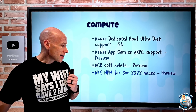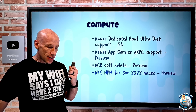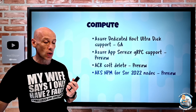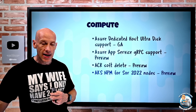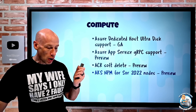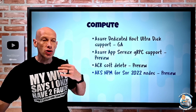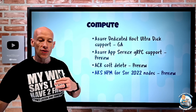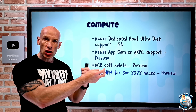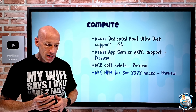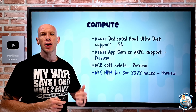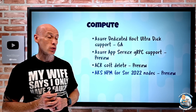For Azure Kubernetes Service, the Network Policy Manager is now available for Windows Server 2022 nodes. AKS supports both Linux and Windows nodes of different versions. The Network Policy Manager is a managed solution to drive network policy — for example, controlling communication between the various pods. Another option is something like Calico, but now I have AKS NPM available on my Server 2022 nodes.